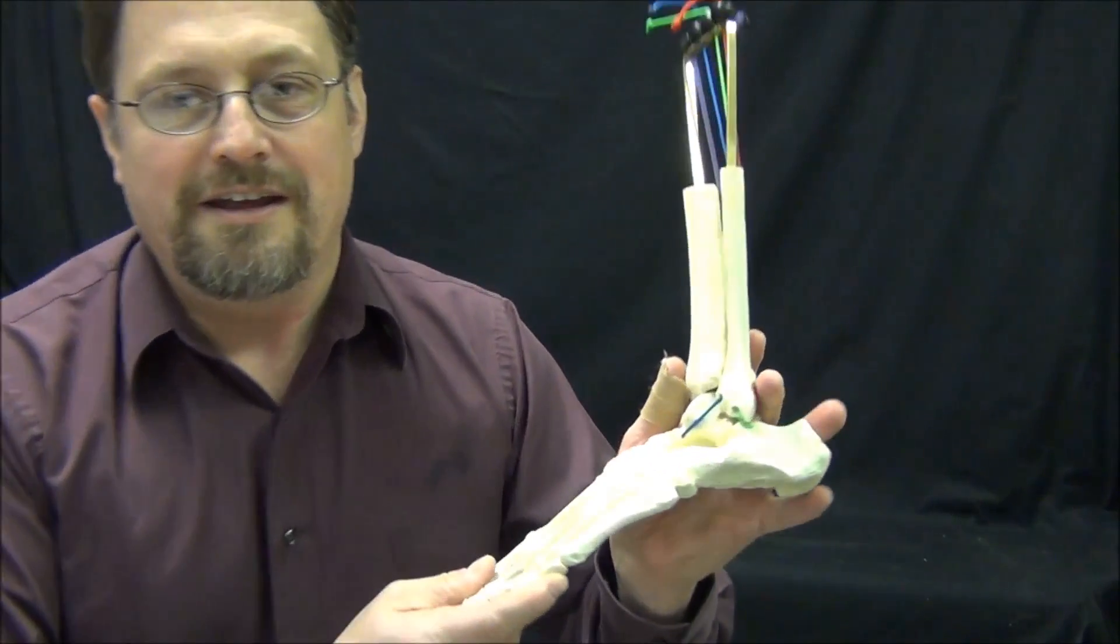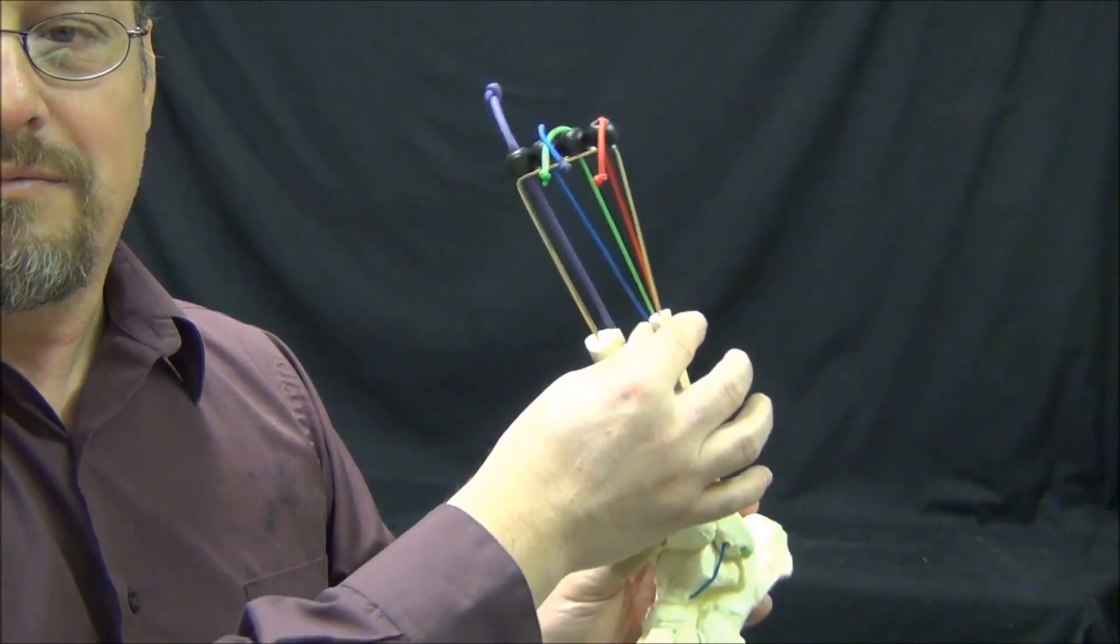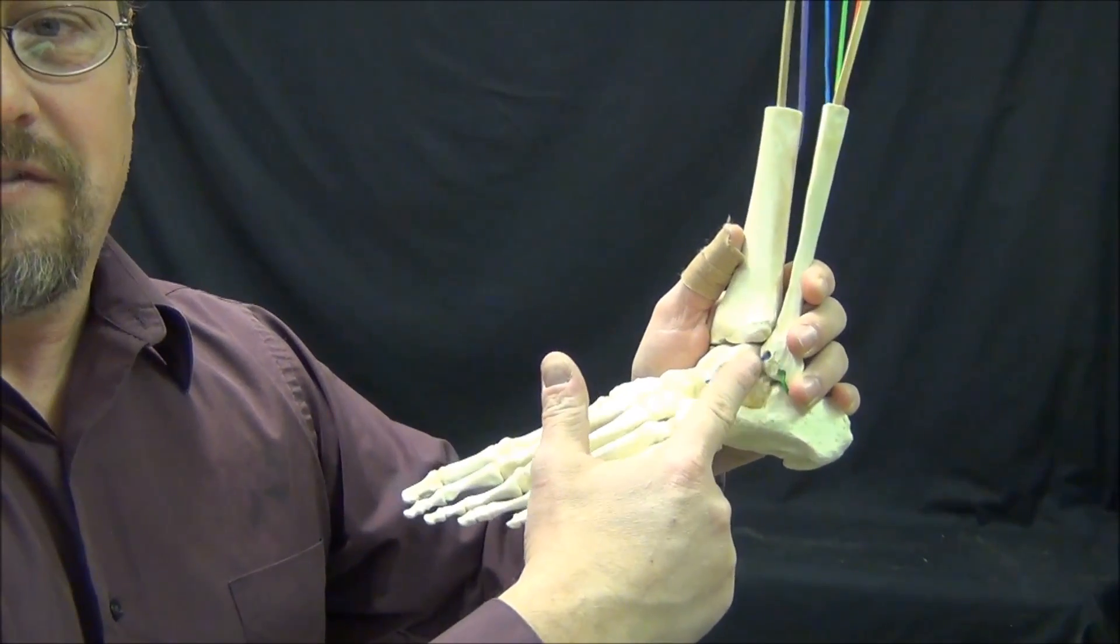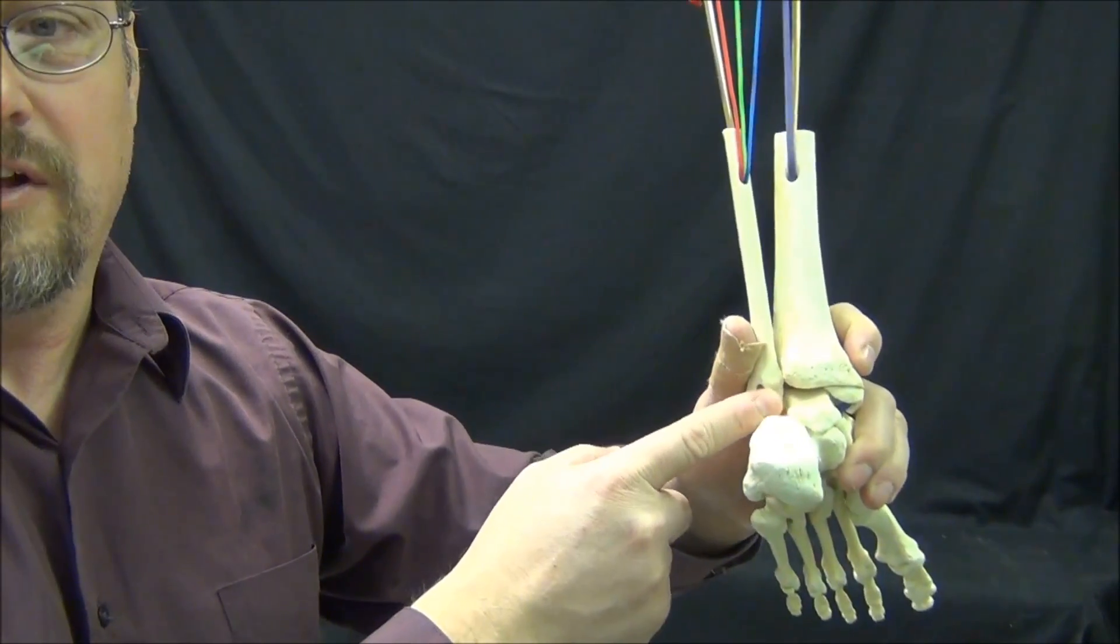What you'll see here is that there are paracord ligaments running from the base up here down across the ankle, taking the route of the anterior talofibular ligament, the calcaneofibular ligament, and the posterior talofibular ligament.